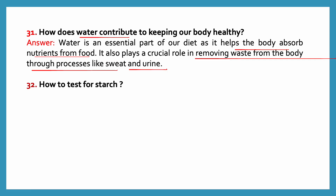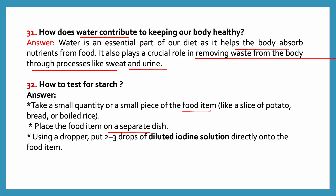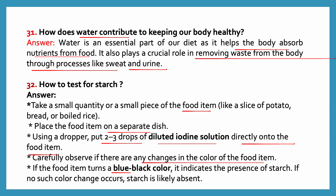How to test for starch? Take a small quantity of the food item like potato, bread or boiled rice, and place it on a dish. Using a dropper, put 2 to 3 drops of diluted iodine solution directly onto the food item. If the food item turns blue-black, it indicates the presence of starch. If no such color change occurs, starch is likely absent.